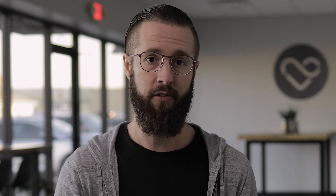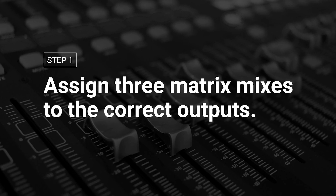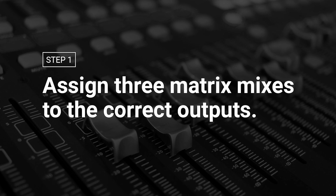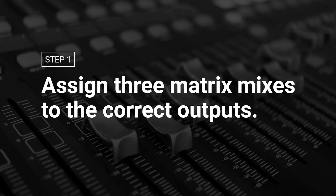Let me show you how to set it up on the X32. If you're using a different digital mixer that supports matrix mixes, this should also translate to your mixer as well. Step one: assign three matrix mixes to the correct outputs. You need three matrix mixes because you have main left, main right, and your subs.